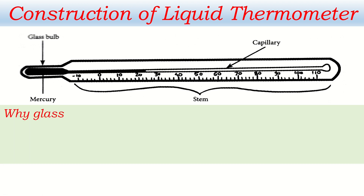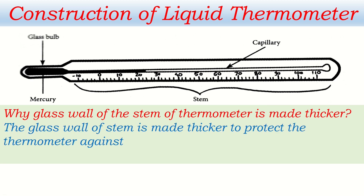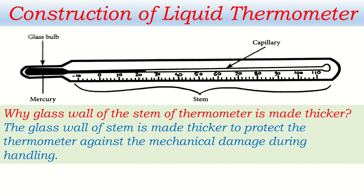Next question: why is the glass wall of the stem of the thermometer made thicker? We hold the thermometer at the stem and bring it into contact with a substance. If the glass wall were very thin, it may break. To prevent breaking and to prevent mechanical damage, the glass wall of the stem is made thicker. The glass wall of the stem is made thicker to protect the thermometer against mechanical damage during handling.